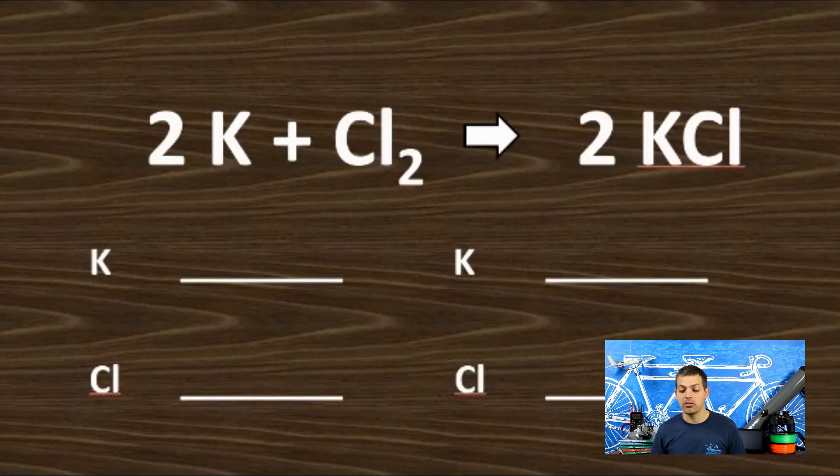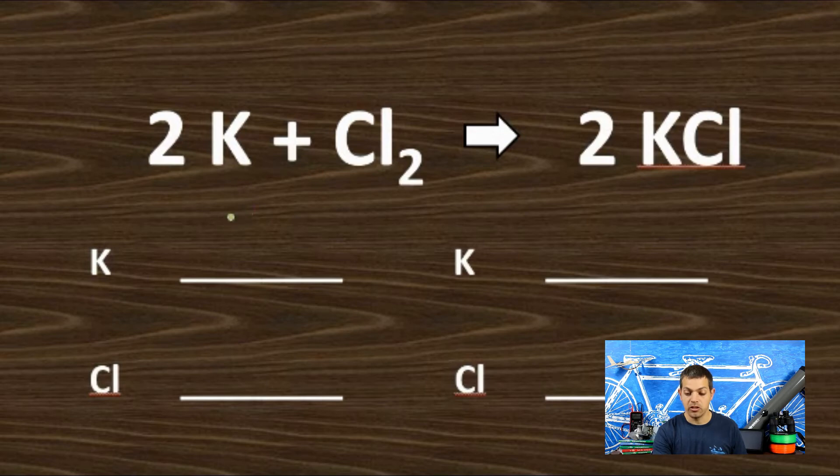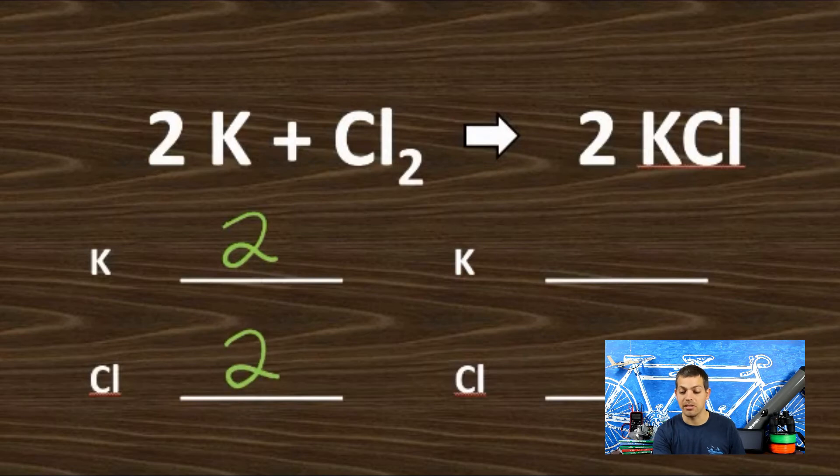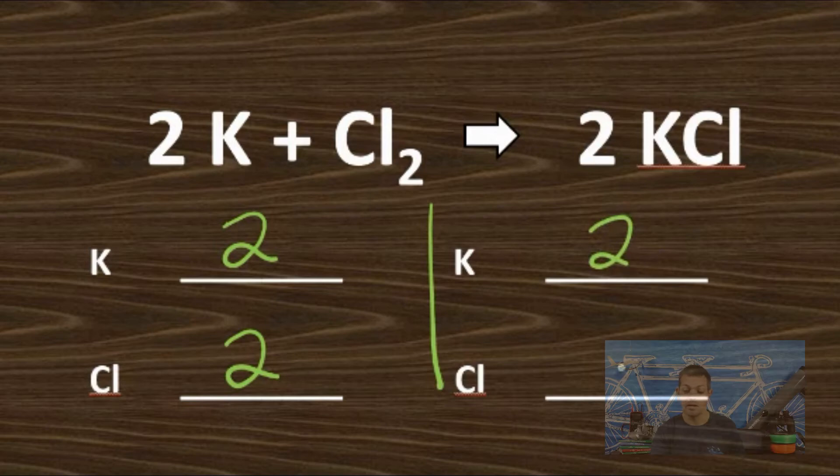2K + Cl2 yields 2KCl. Our potassiums, there's two because of our coefficient. Our chlorine, there's two because of the subscript. That two coefficient does not go with the chlorine because there's a plus sign in between. And then on the right hand side, we have two potassium and we also have two chlorine. This time that coefficient does go with the chlorine. So this is a balanced problem.